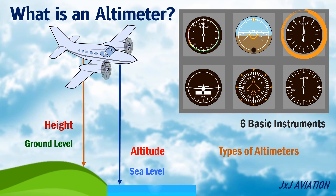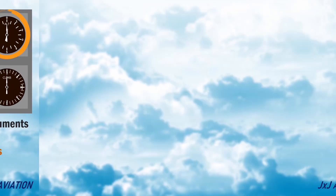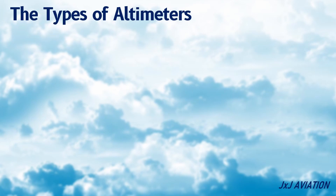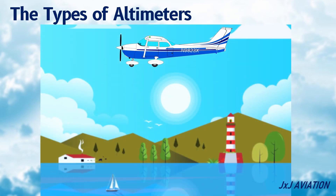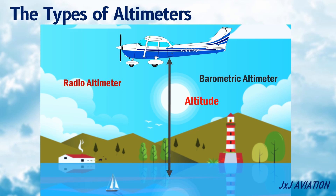Let's look at the different types of altimeters. On an aircraft, there are two types of altimeters that are commonly used: the barometric altimeter and the radio altimeter. The barometric altimeter gives the altitude of an aircraft, and the radio altimeter provides the height of an aircraft. Both altitude and height information are required for safe operation of an aircraft.